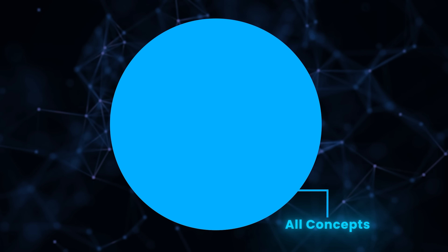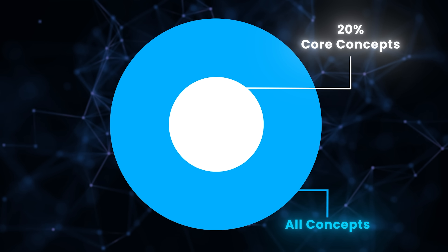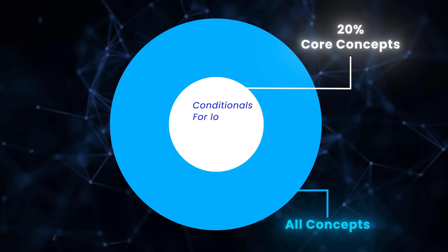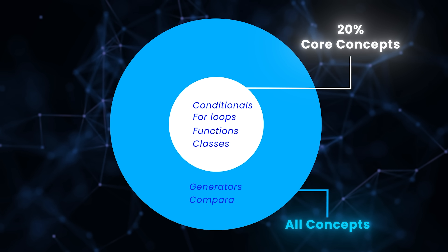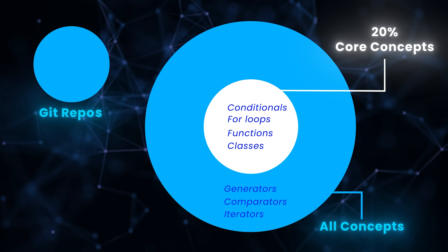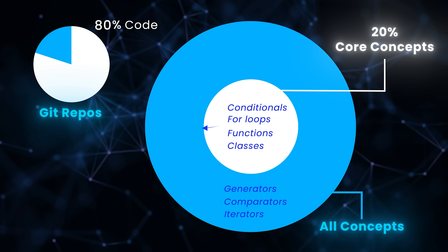So you've picked a programming language — how can you learn it really fast? Imagine a circle representing everything there is to know about your chosen language. Inside it is a smaller circle, roughly 20% of the size of the outer one. This inner circle contains core concepts like conditionals, for loops, functions, and classes. What's not included are advanced concepts like generators, comparators, or iterators. If you pick any Git repository in that language, 80% of the code comes from that 20% inner circle. This is the 80-20 rule of programming — learn those core concepts and move on.